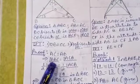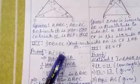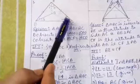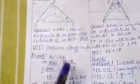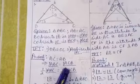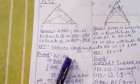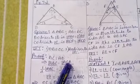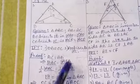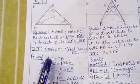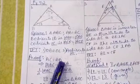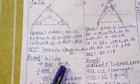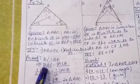And which is the angle opposite to side AB? That is angle ACB. In an isosceles triangle, since AB equals AC, the angles opposite to these equal sides — angle ABC and angle ACB — are also equal.